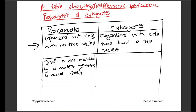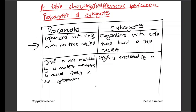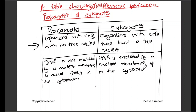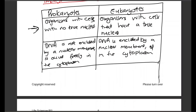For prokaryotes the DNA occurs freely in the cytoplasm. For eukaryotes, the DNA or genetic material is enclosed by a nuclear membrane and occurs in the nucleus. Done with that.